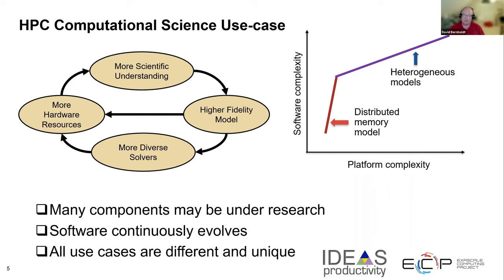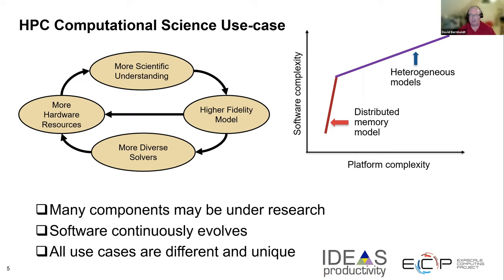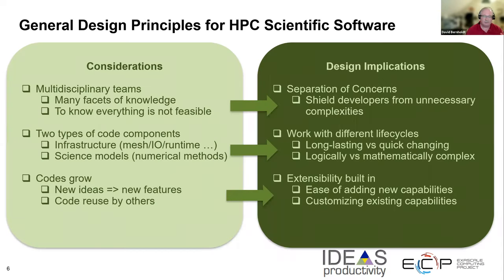In addition to all of this, many — sometimes all — components of a large software package may be the subject of research in one way or another while we're working on things. No matter what's going on, the software continuously evolves: you're adding science, addressing functional issues, and all these kinds of things. And if you're doing discovery-class science especially, every big simulation campaign is probably a different, unique case for the science. It taxes your application in new ways, and you have to deal with all the complexities that brings. These kinds of experiences over a long time have led us to some basic design principles for HPC scientific software.